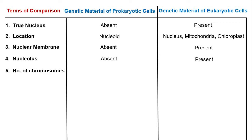Regarding number of chromosomes, it is usually one in prokaryotic cells and more than one in eukaryotic cells.